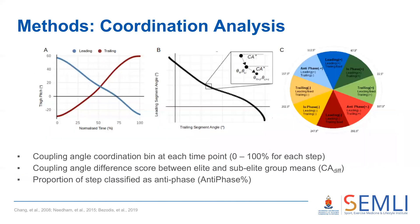Coupling angles were calculated from the angle-angle plots of the leading and trailing thigh at each time-normalized data point. The coupling angles were classified into one of eight coordination patterns or bins and color-coded to provide a visual representation of an individual's coordination profile. To quantify differences between the elite and sub-elite groups, a coupling angle difference score was calculated from the group means at each time point.